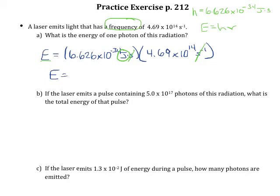So plugging that into your calculator and rounding to three significant figures, you should get 3.11 times 10 to the negative 19 joules. This is a very small number, but that makes sense because we were only looking at the energy of one photon.